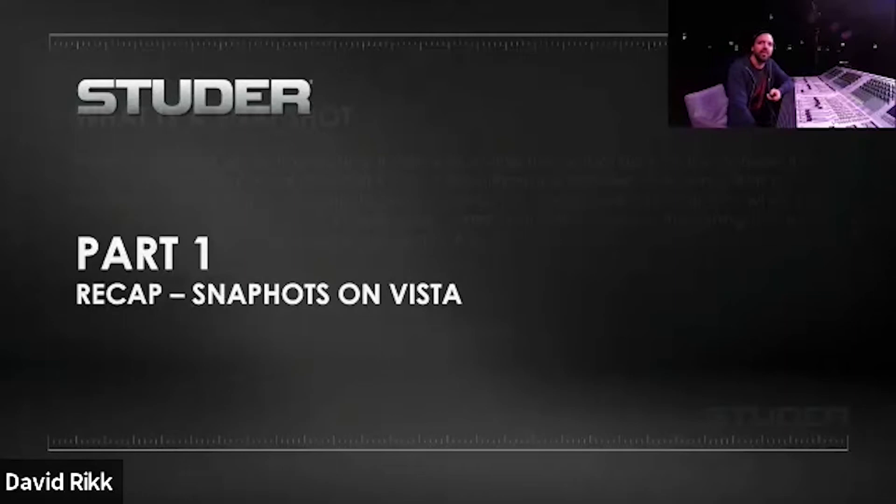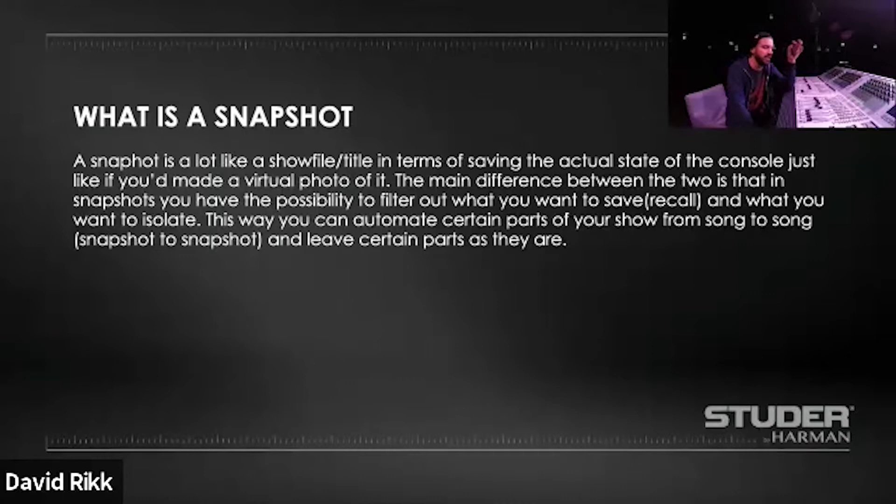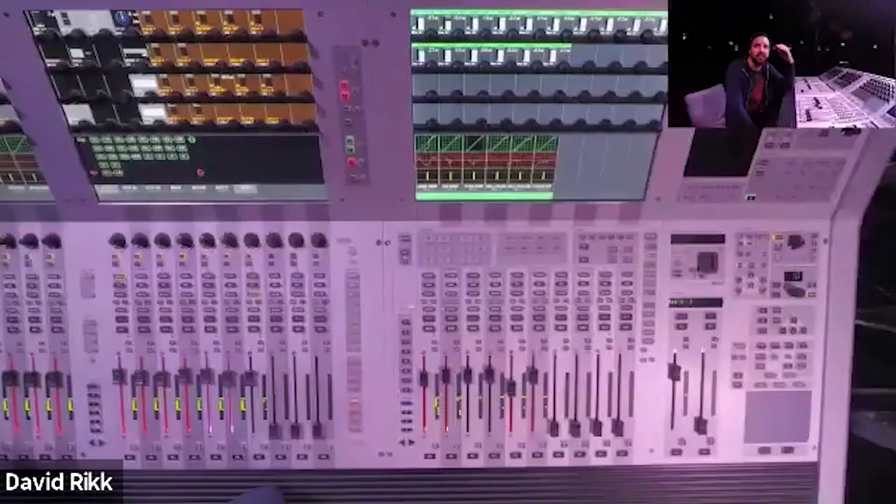Recap: snapshots on Vista. So what is a snapshot? A snapshot is basically a lot like a show file in terms of saving the actual state of the console — just like you made a photograph of the actual state. The main difference is that in snapshots, you have the possibility to filter out what you want to save or recall and what you want to isolate. This way you can automate certain parts of your songs and your whole show, making a snapshot list for every song and saving those changes in those snapshots.